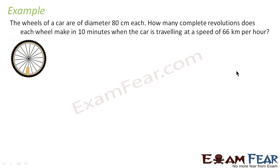Let's take one example. The wheels of a car are of diameter 80 cm each. How many complete revolutions does each wheel make in 10 minutes when the car is traveling at a rate of 66 kilometers per hour? The question is asking us to find the number of revolutions the wheel makes in 10 minutes.